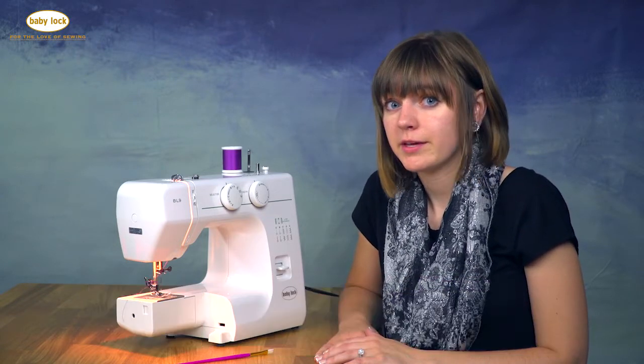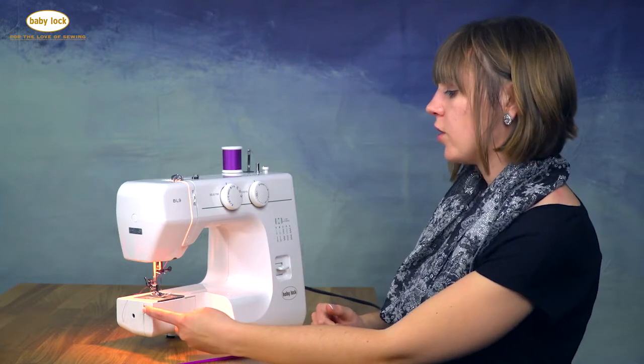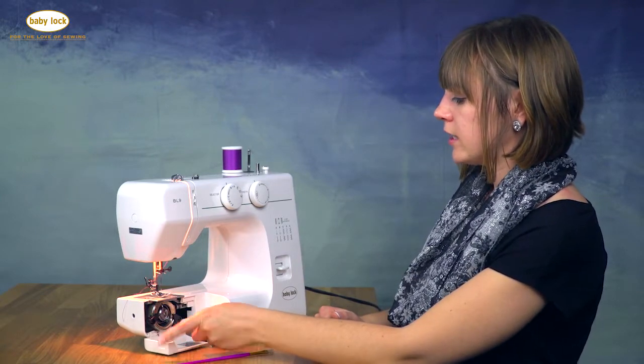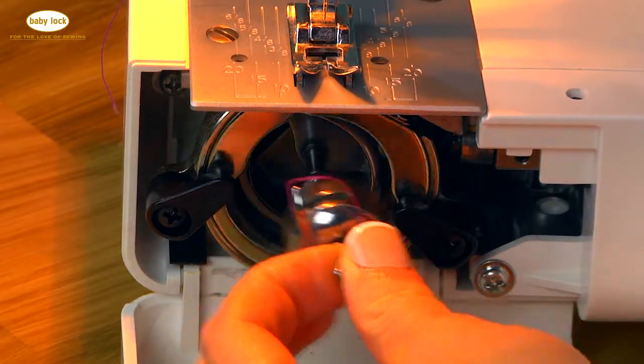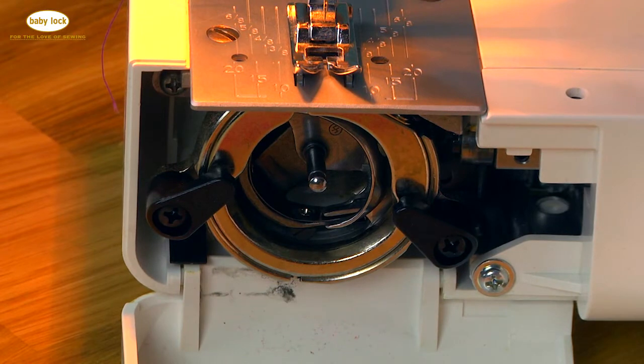Next I'm going to show you how to clean the bobbin case area. Don't let this intimidate you because there are only three pieces. First, open up the front panel of the machine and take out the bobbin. Just set this aside for now.